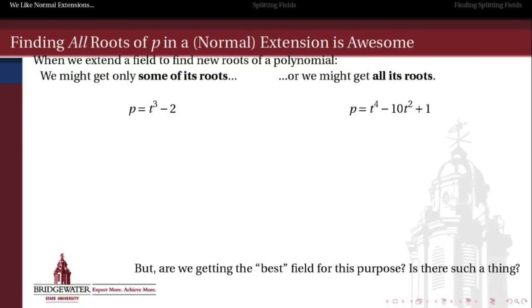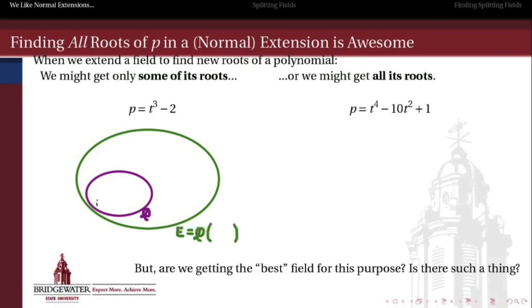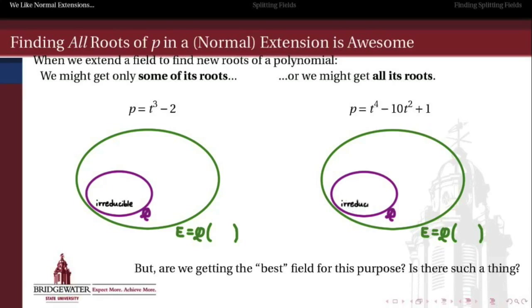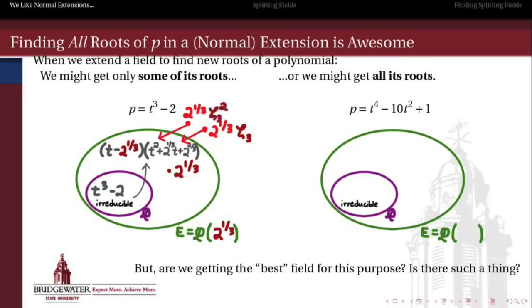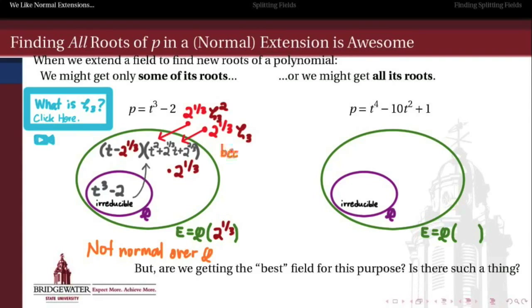Recall what we said about normal extensions. When we extend a field to find new roots of a previously irreducible polynomial, we might get some of its roots, or we might get all of its roots. For t³ - 2, if we extend by the real cube root of 2, we only get one of the roots of t³ - 2 because the others are not even real — they're 2^(1/3) times the cube roots of unity. So that extension is not normal over the rationals, because those missing roots prevent us from splitting t³ - 2 completely into linear factors in E.